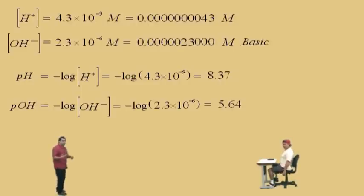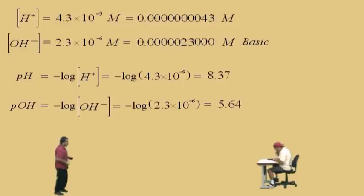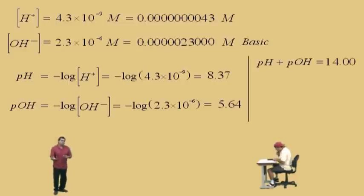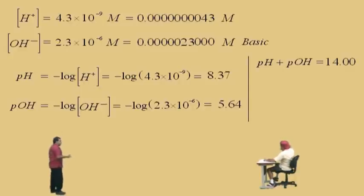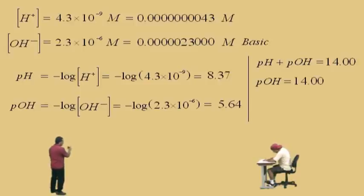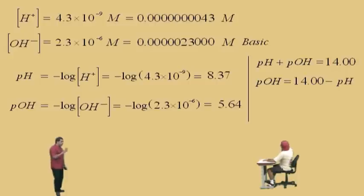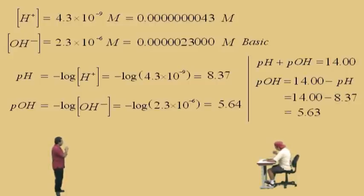Now remember earlier, we have all our information — we have the hydrogen ion concentration, hydroxide ion concentration, our pH and pOH. Suppose we use the fact that the sum of pH and pOH is 14.00. Well, if we know pOH, it should be 14 subtract pH. Doing the calculation this way, 14 subtract 8.37, we get 5.63, and we do have a slight difference in our answers.